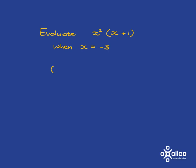OK, so wherever you saw an x, you needed to put a minus 3. So remember, it's the whole of x that's squared, so it's the whole minus 3 that gets squared. And then you have minus 3 plus 1.